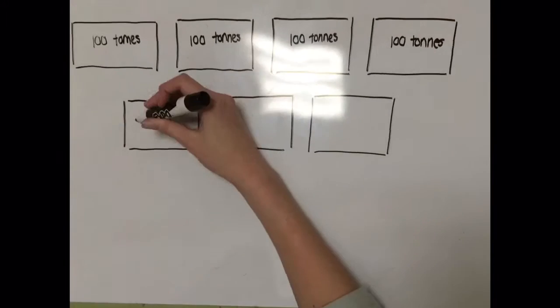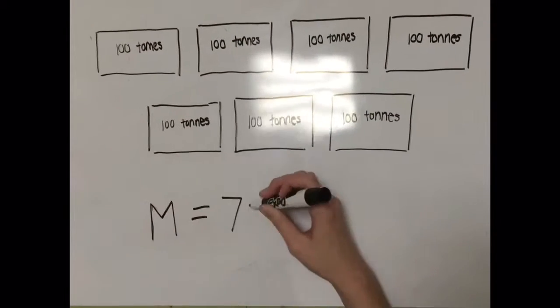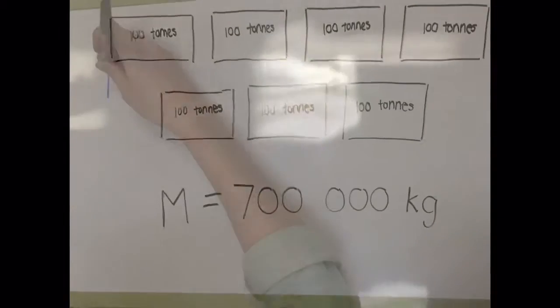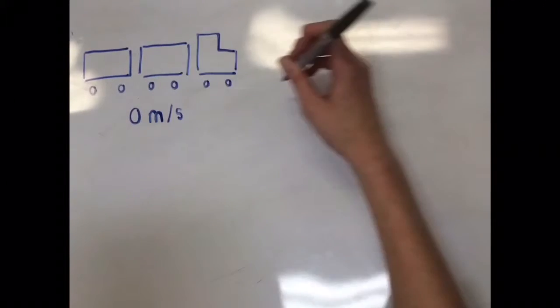If each weighs 100 tons, which is equivalent to 100,000 kilograms, that means the entire train would have a mass somewhere around 700,000. If we time how long it takes for the train to go from rest position to its full speed on ice, it proves to be approximately 4 seconds.